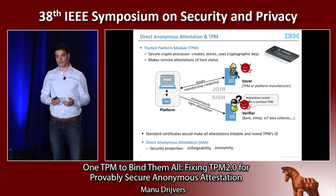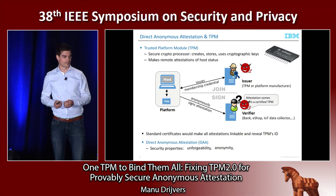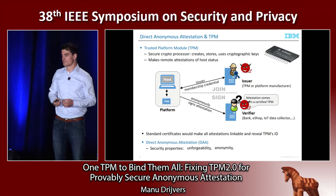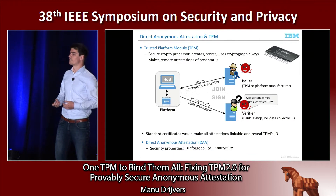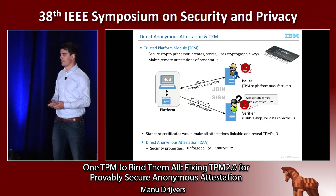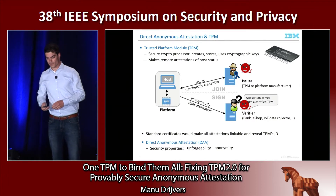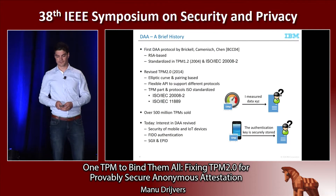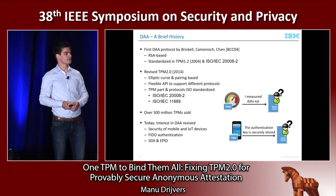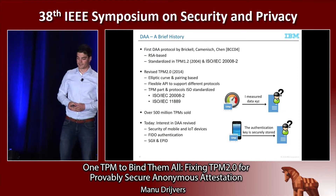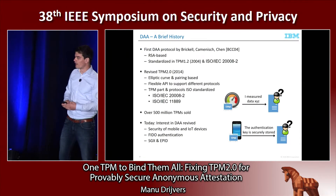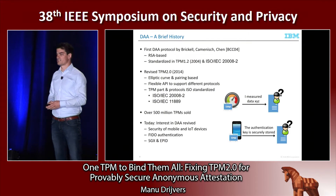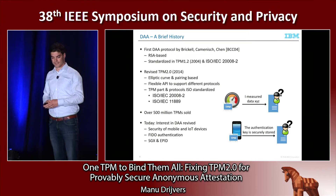Second, we want anonymity — that was the whole point of anonymous attestation — and we want that to hold even if the issuer's authority is corrupt. So no attestation that the platform makes should leak any information about the identity of the platform. In terms of history, this was introduced in 2004 by Brichel, Kamenisch, and Chen at CCS, and was designed for the TPM 1.2 version, using RSA keys.